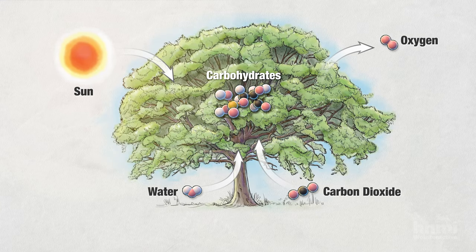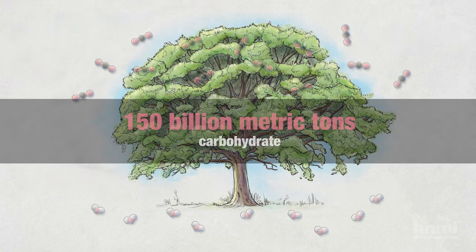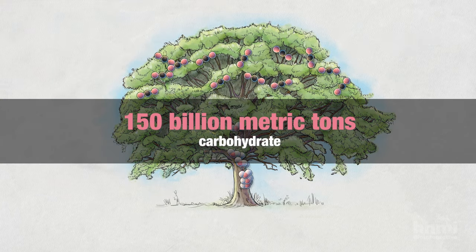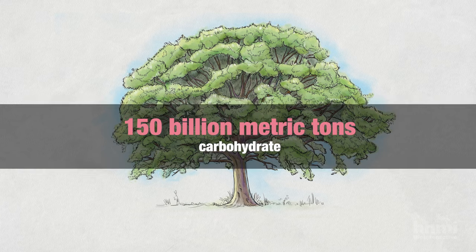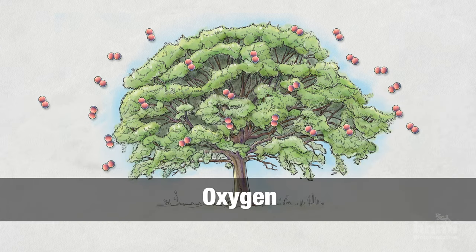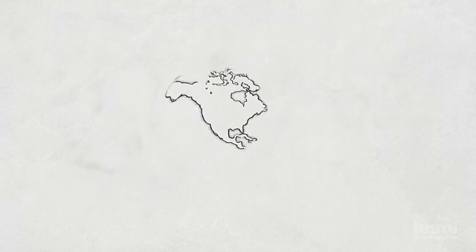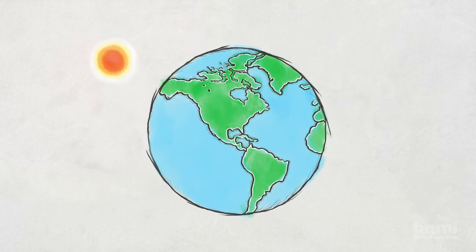Globally, photosynthesis produces an estimated 150 billion metric tons of carbohydrate per year and is responsible for the oxygen in our atmosphere, making it one of the most important chemical processes for life on Earth.